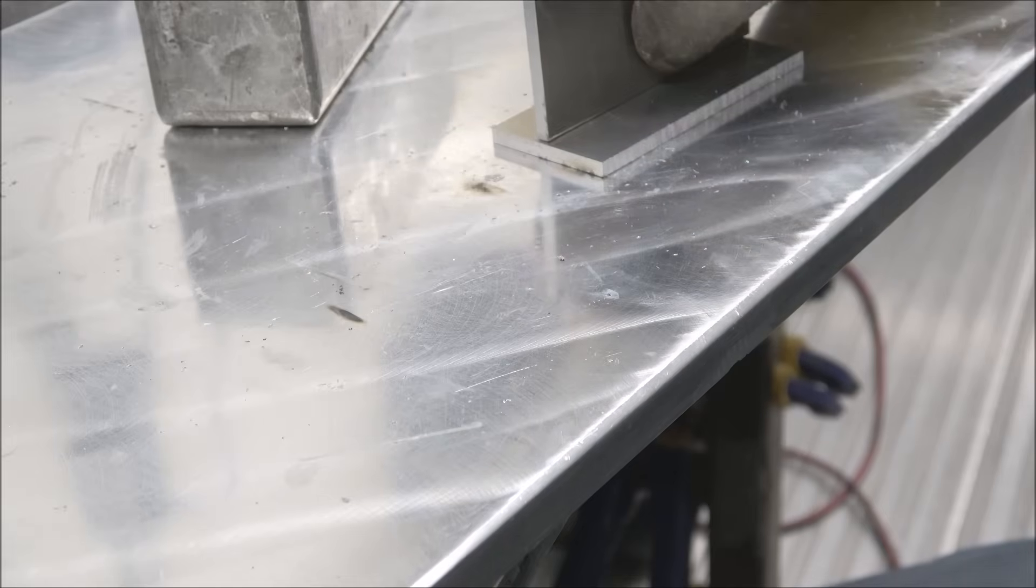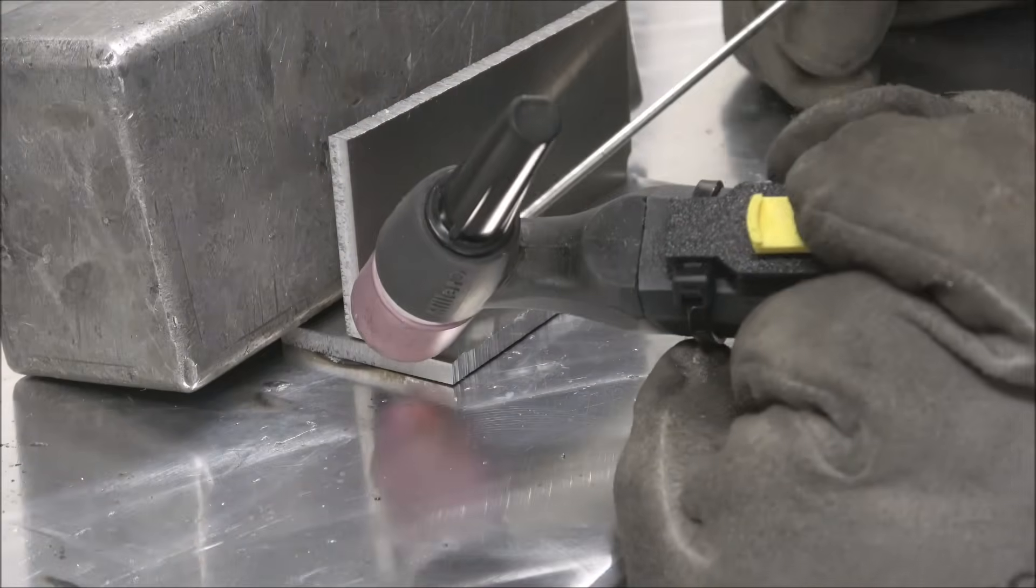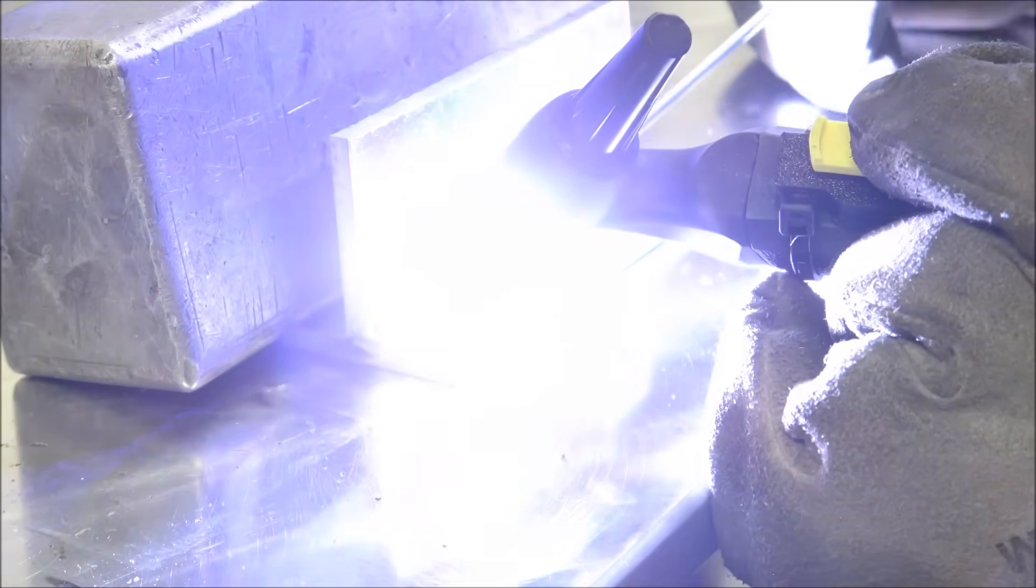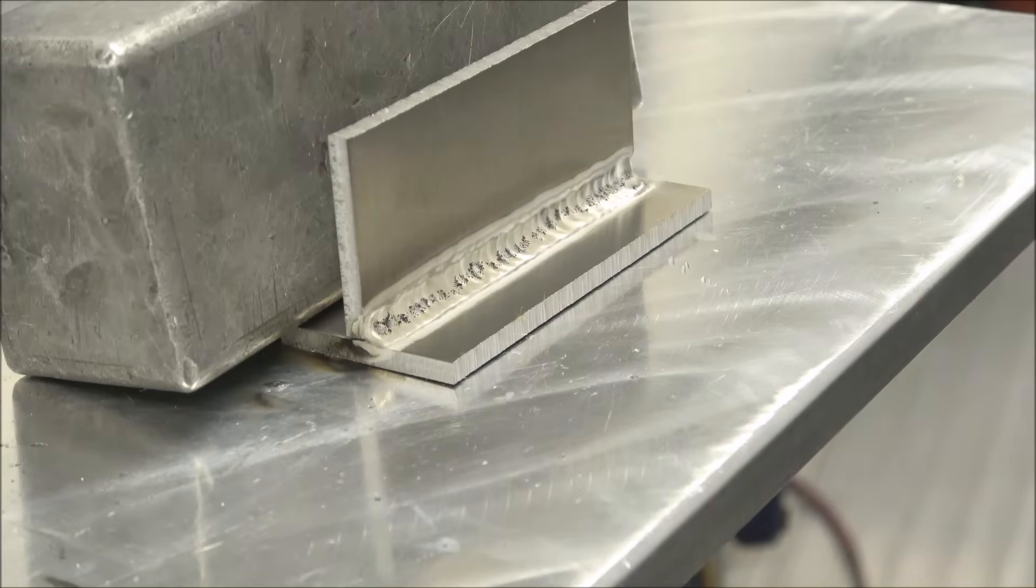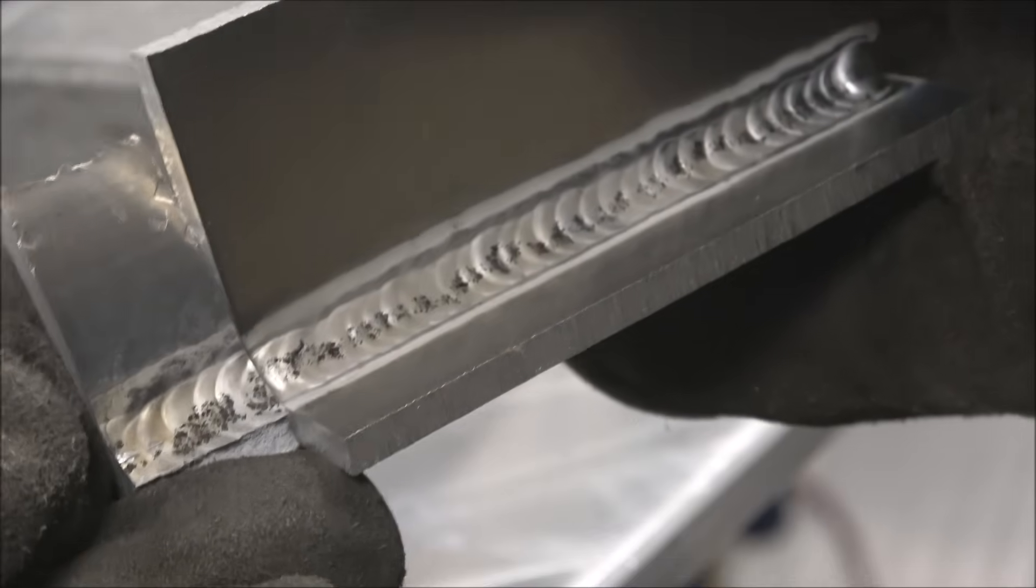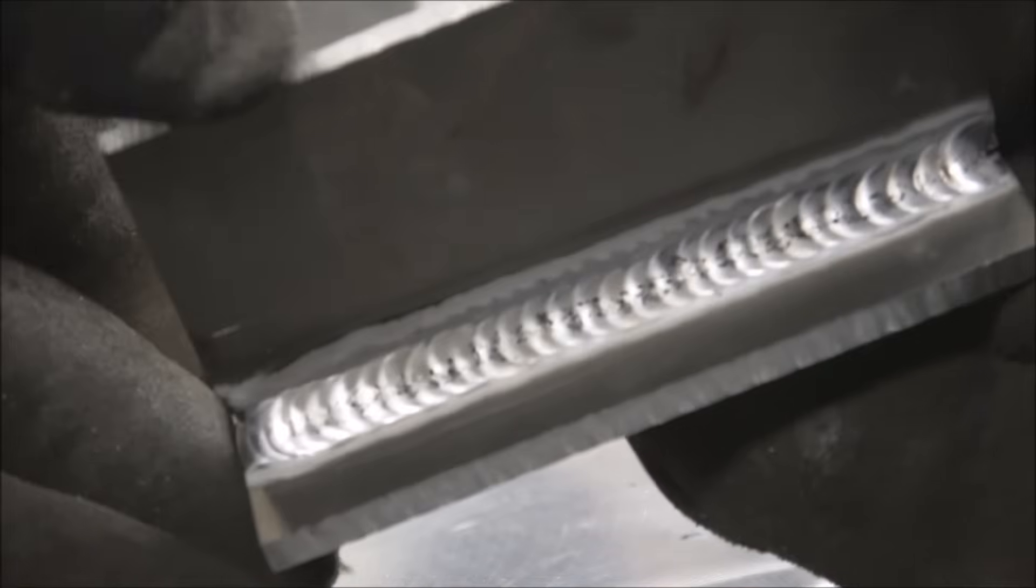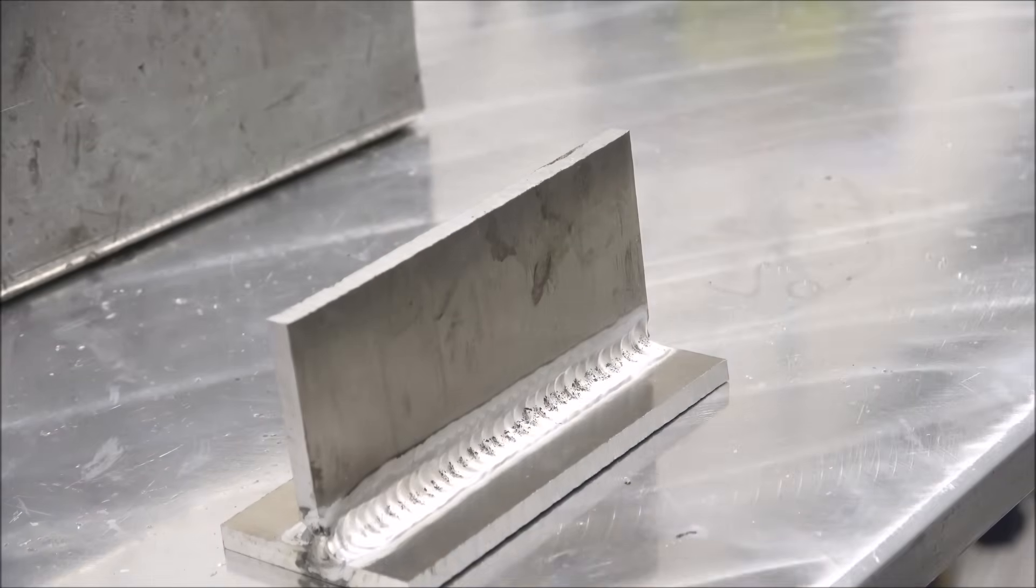Round three. This time I'm trying a lot smaller weld and letting it cool down between passes. Okay, welded that side. Let it cool. Welded this side. Let that cool. Then stack up some more weld on each side and cut and test.